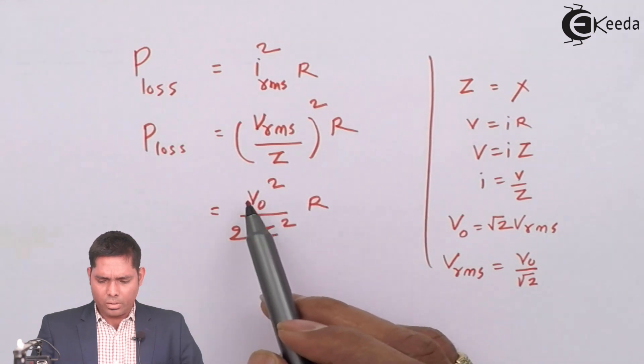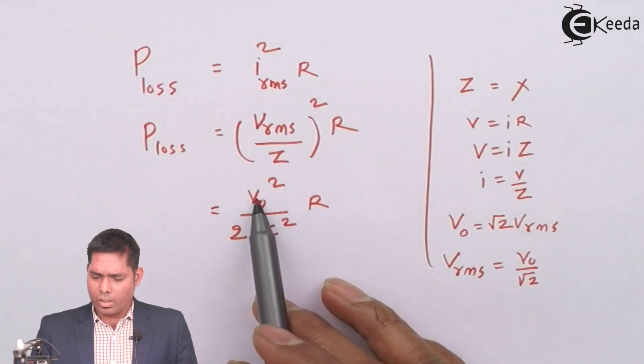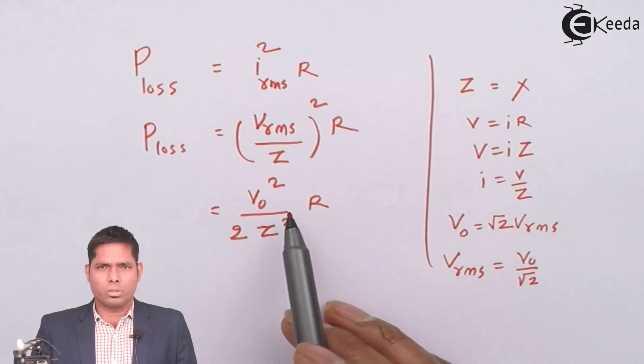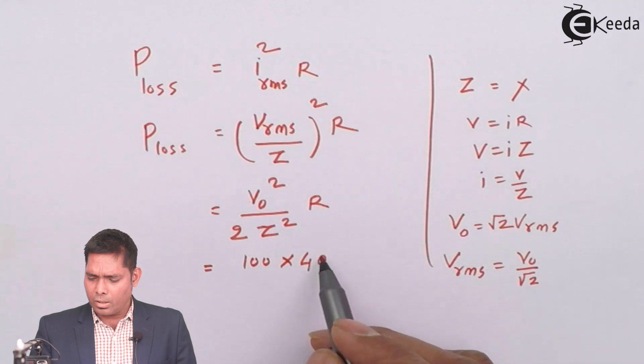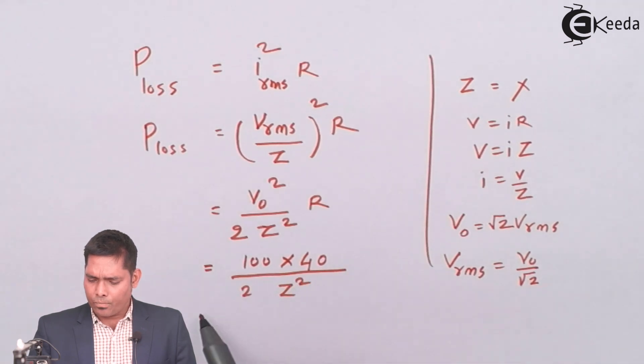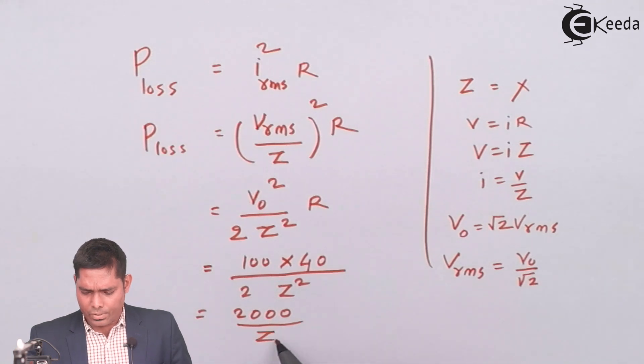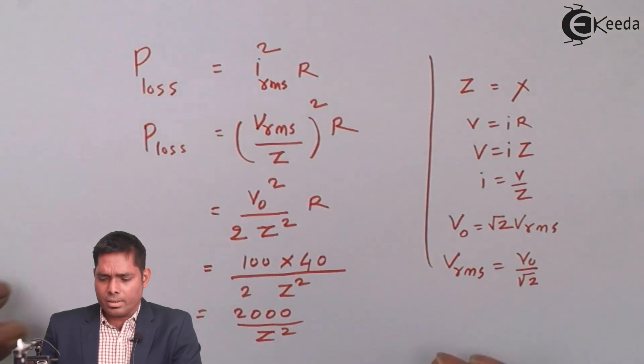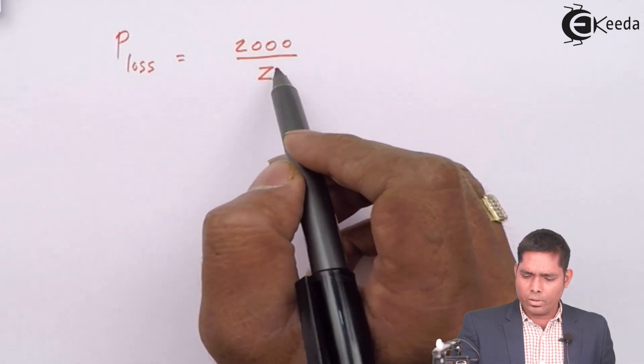So in this situation, in this case, so I will write that only here. V0 by root 2 square. So it is V0 square by 2 Z square into R. Where Z stands for the impedance of circuit. So this is 10 given in the question. This is 10. And this is R. R is 40. So this one is 10 into 10, that is 100 into 40, that is 4000 here. Divide by 2. It is 2000. So I will just put that here. So this is 10 square, 100 into R is 40, divide by 2 times Z square. So it is 2000 divided by Z square. So as I will put the value of Z square I will get the answer. So 2000 upon Z square. Power loss is 2000 divided by Z square.